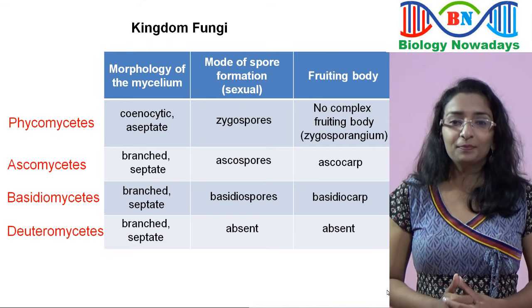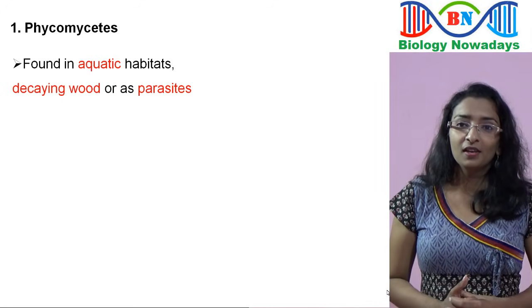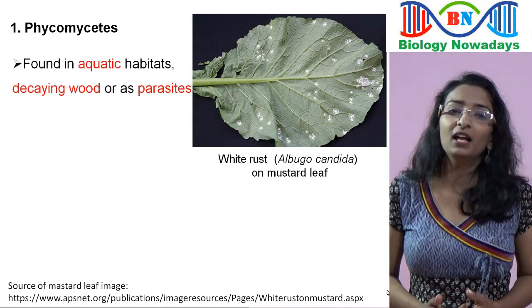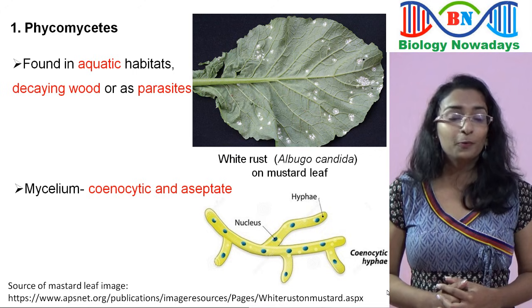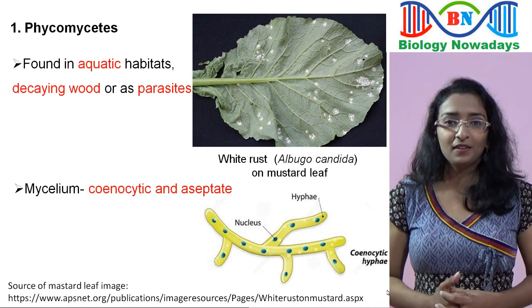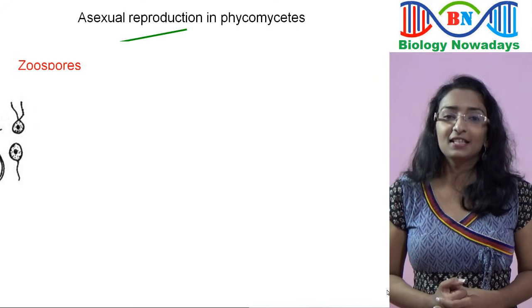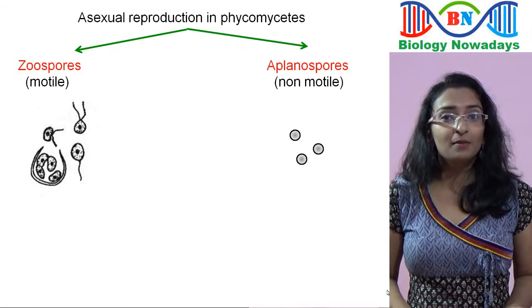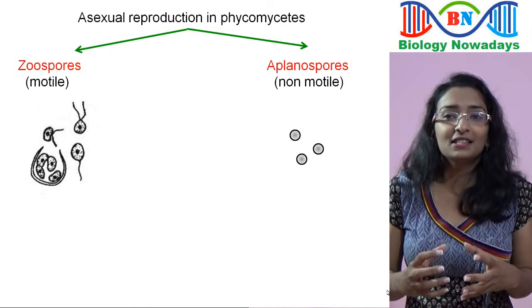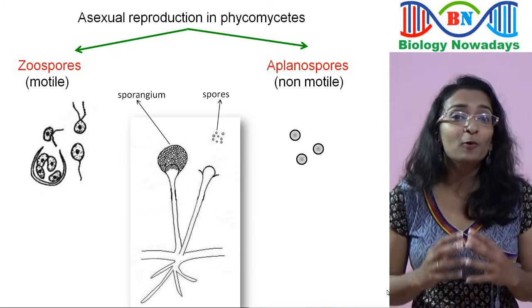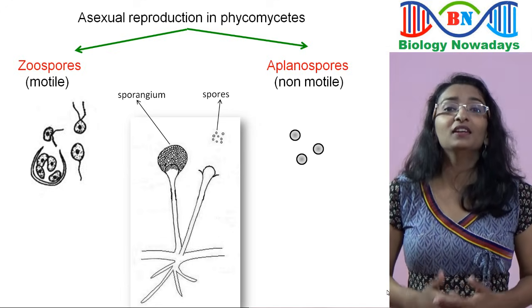Phycomycetes are found in aquatic habitats, decaying wood, or as parasites. For example, white rust on mustard leaf is due to Albugo candida. The mycelium of Phycomycetes is coenocytic and aseptate, meaning without septa or cross walls. Asexual reproduction involves production of spores such as zoospores and aplanospores. Zoospores are motile while aplanospores are non-motile. Spores are formed endogenously, meaning produced inside a structure called sporangia. When the spores mature, the sporangia breaks open and releases all spores, and each spore germinates into an individual fungal hypha.